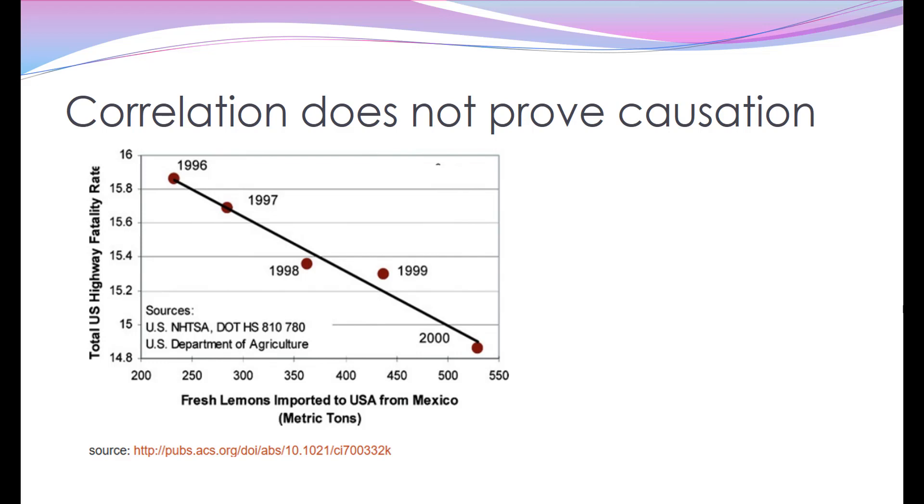Basically what this is showing is that there's actually a strong correlation between the number of US fatalities on highways and the number of fresh lemons imported to the USA from Mexico. We know that the fresh lemons being imported doesn't affect the fatality rate, but nevertheless they do produce a very strong correlation. So that's why you must always be very cautious about trying to derive a conclusion that a correlation is actually a causation.